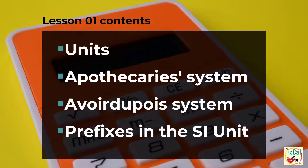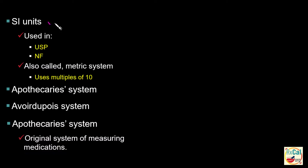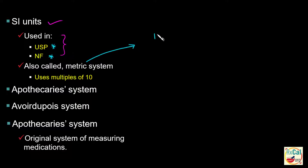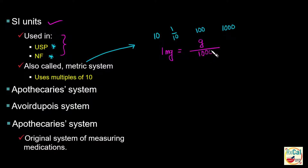Units. The International System of Units, or SI Units, is the official system of units used by the U.S. Pharmacopoeia and National Formulary (NF). This system is also generally known as the metric system. In the metric system, we use 10 and its multiples to express different magnitudes. For example, milligram is obtained by dividing the gram amount by 1,000. One-tenth of a liter is called a deciliter.